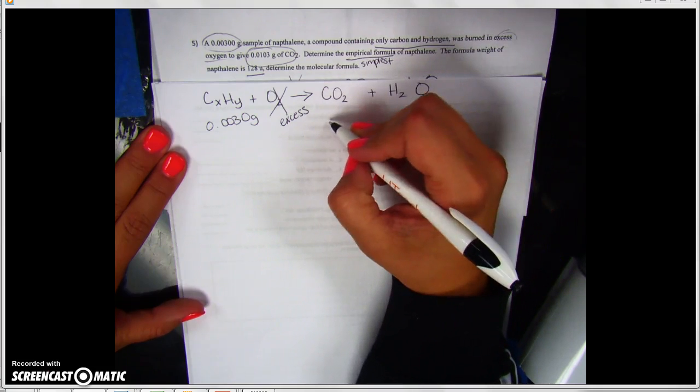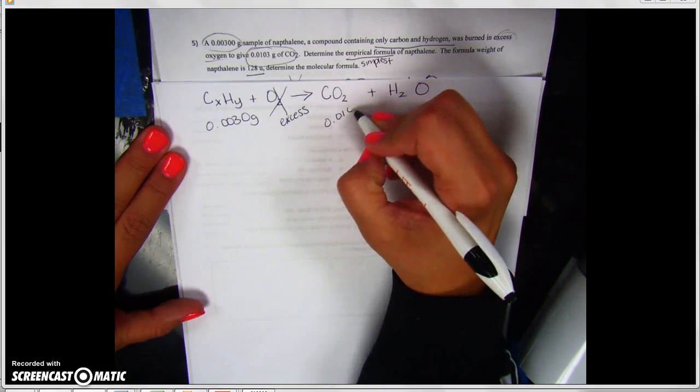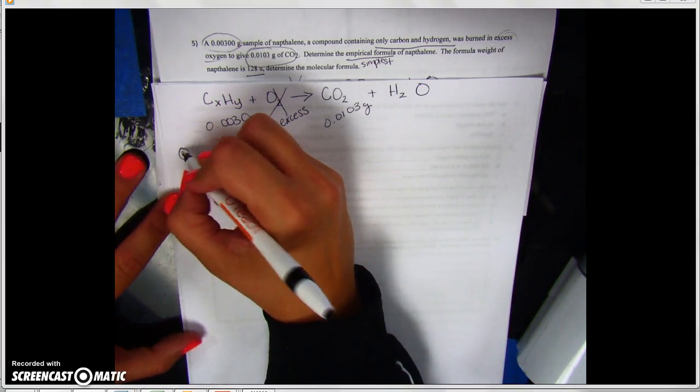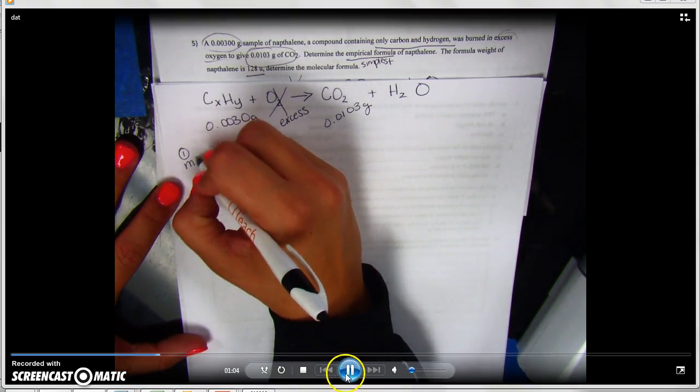So as you can see, I'm just setting up the problem so we can see the reaction. I have labeled that we have oxygen in excess. I've also gone ahead to label how much of each of the two, the reactant and the product that I have. This is going to be important for us.